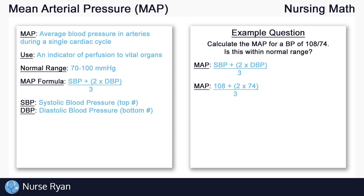We can fill in our systolic blood pressure, which is 108, and our diastolic blood pressure, 74. Next, always remember to do what is inside the brackets first. So 2 times 74 gives us 148. This leaves us with 108 plus 148, all over 3. Now if we add the top numbers we get 256, and finally we divide 256 by 3 to get 85.3 repeating.